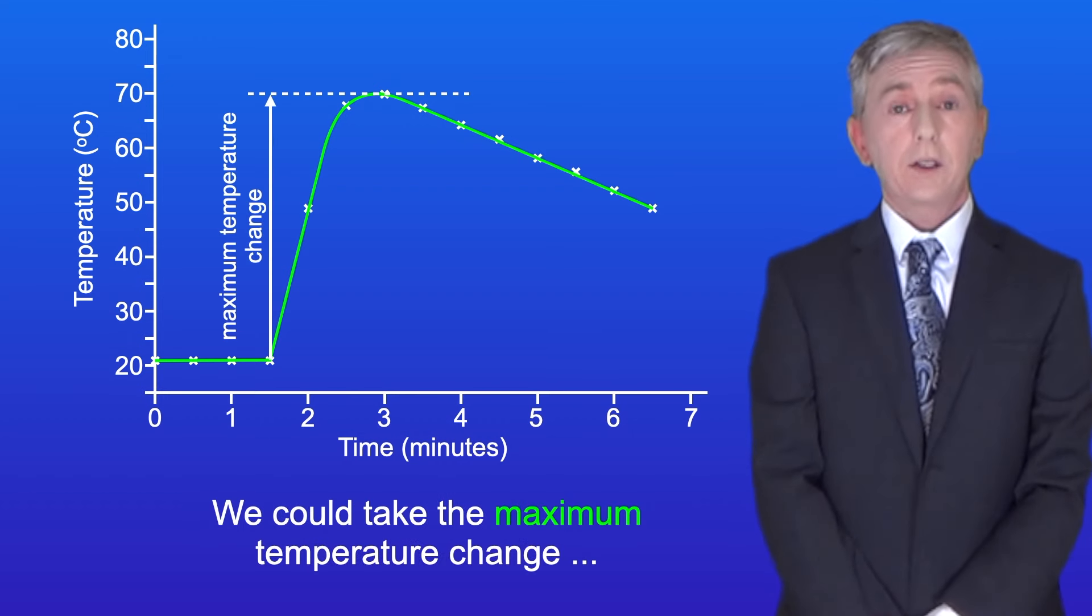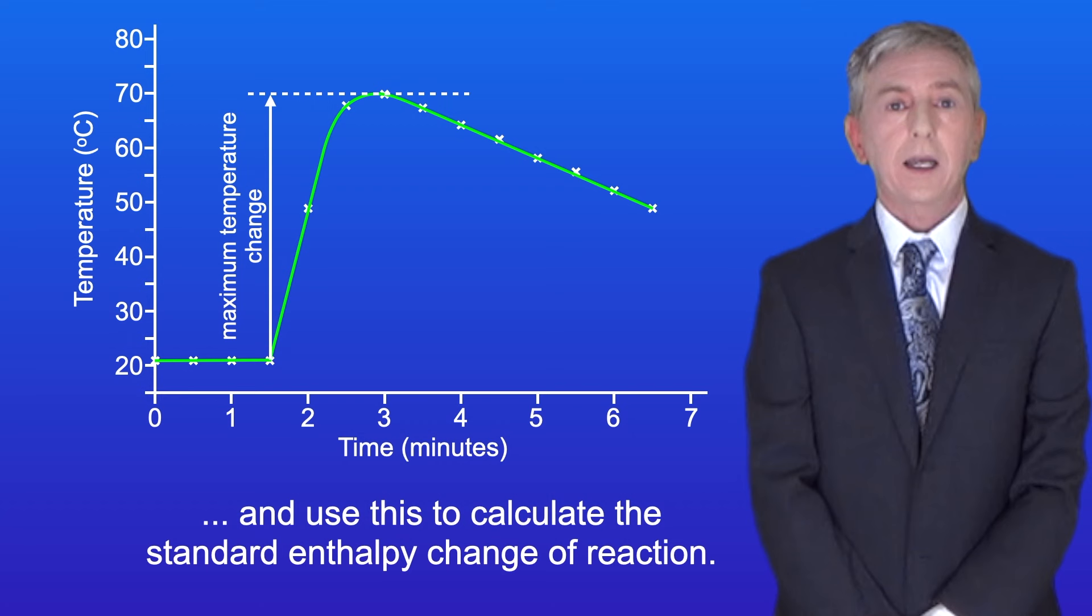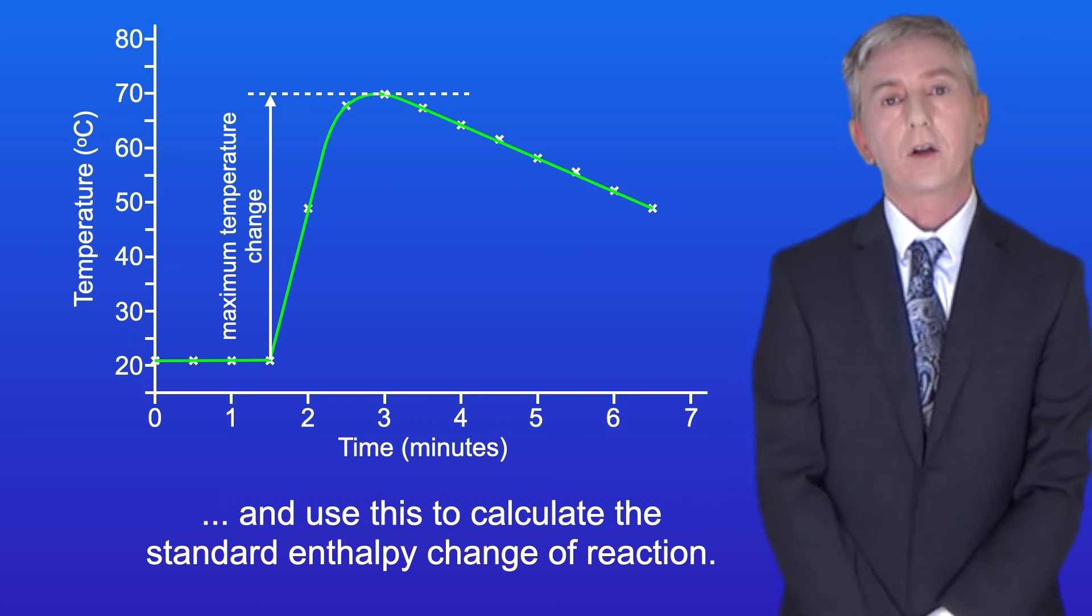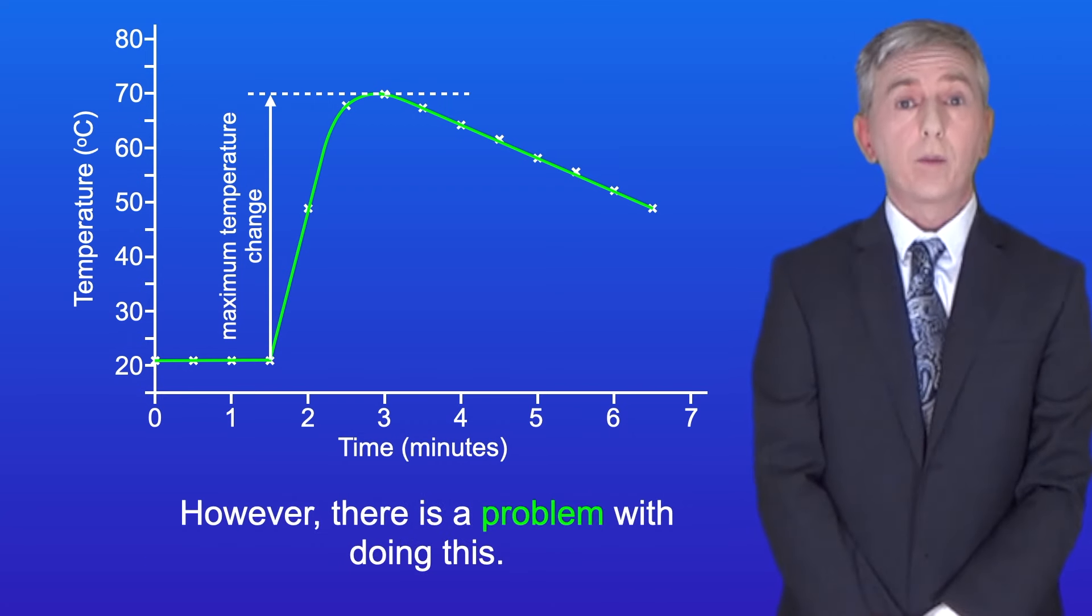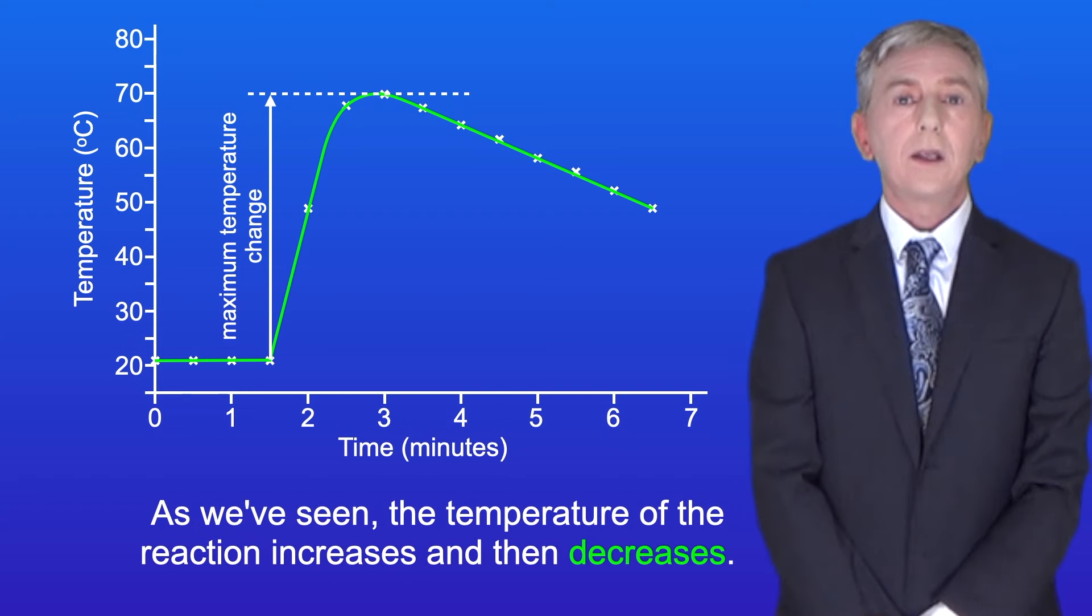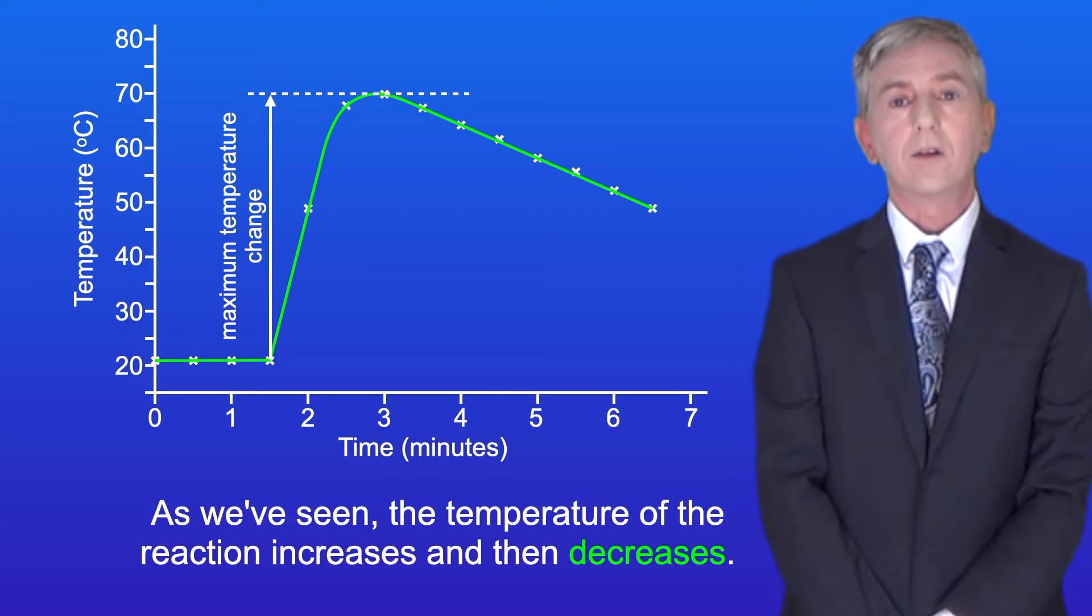Now we could take the maximum temperature change and use this to calculate the standard enthalpy change of reaction. However, there is a problem with doing this. As we've seen, the temperature of the reaction increases and then decreases.